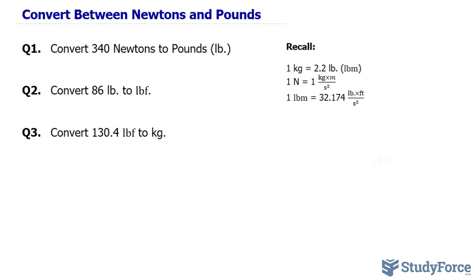With that being said, our first challenge is to convert 340 newtons to pounds. Now there's a lot to discuss, so let's begin by writing down 340 newtons. 340 newtons is the same thing as saying kilograms times meters per second squared. Newtons is an SI unit, and SI units use metric units, such as grams and meters.